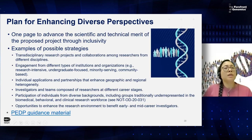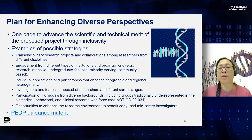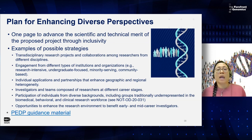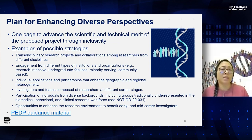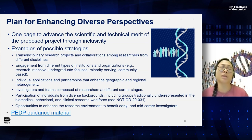One new facet of this RFA is that we are requiring for both R01 and R21 applications a plan for enhancing diverse perspectives. This is a new component that other initiatives at NIH, notably the BRAIN initiative, have been pioneering. It's basically a one-page addition to your application that describes how you will advance the scientific and technical merit of the proposed project through inclusivity. The PEDP guidance material linked in the RFA shows examples of possible strategies. These should be tailored to your research aims, and there's obviously going to be a difference in scope between R01 and R21 research.